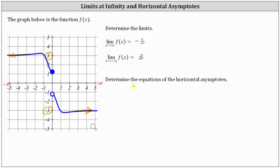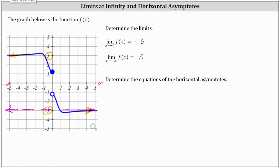Next, we're asked to determine the equations of the horizontal asymptotes, which we find by evaluating the limits at infinity shown above. Since the limit of f of x as x approaches positive infinity equals negative three, the line y equals negative three is a horizontal asymptote. Notice how if we sketch the horizontal line y equals negative three, the graph approaches this horizontal line as it moves to the right. So one equation for a horizontal asymptote is y equals negative three.